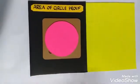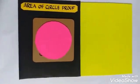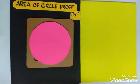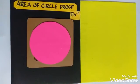Hello everyone. Today we will learn about area of circle proof. Everyone knows that area of circle is pi r square, right? Where r is the radius of the circle.